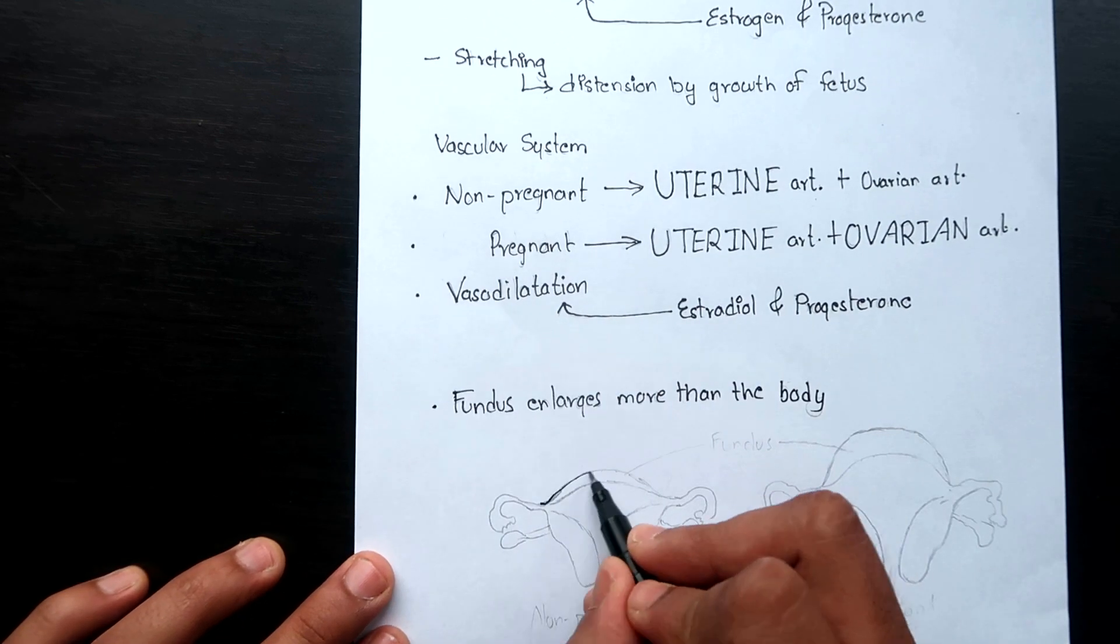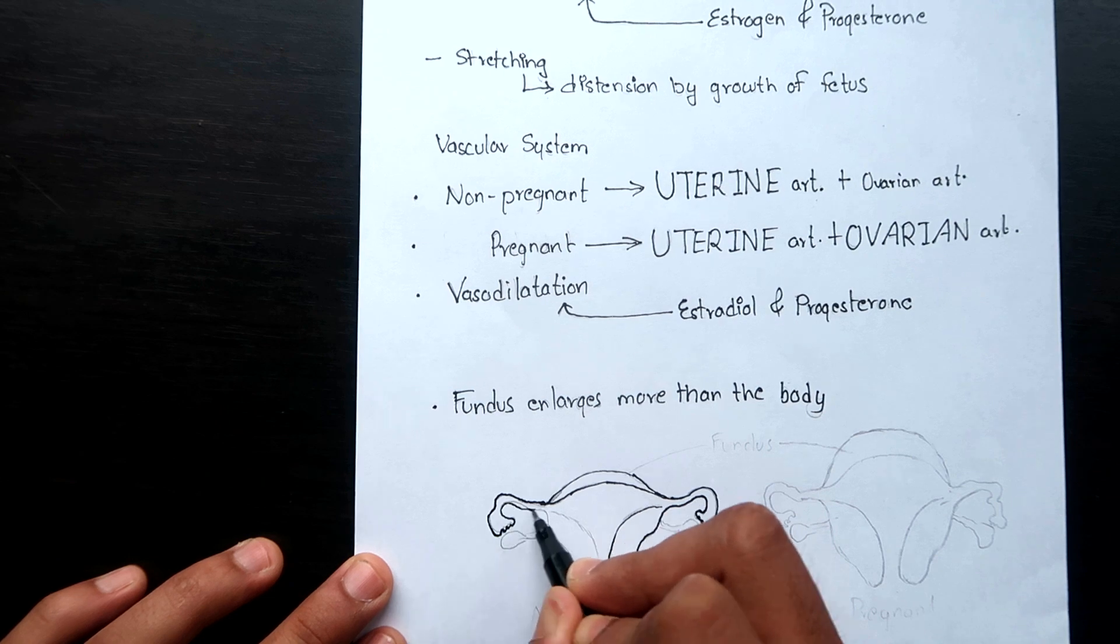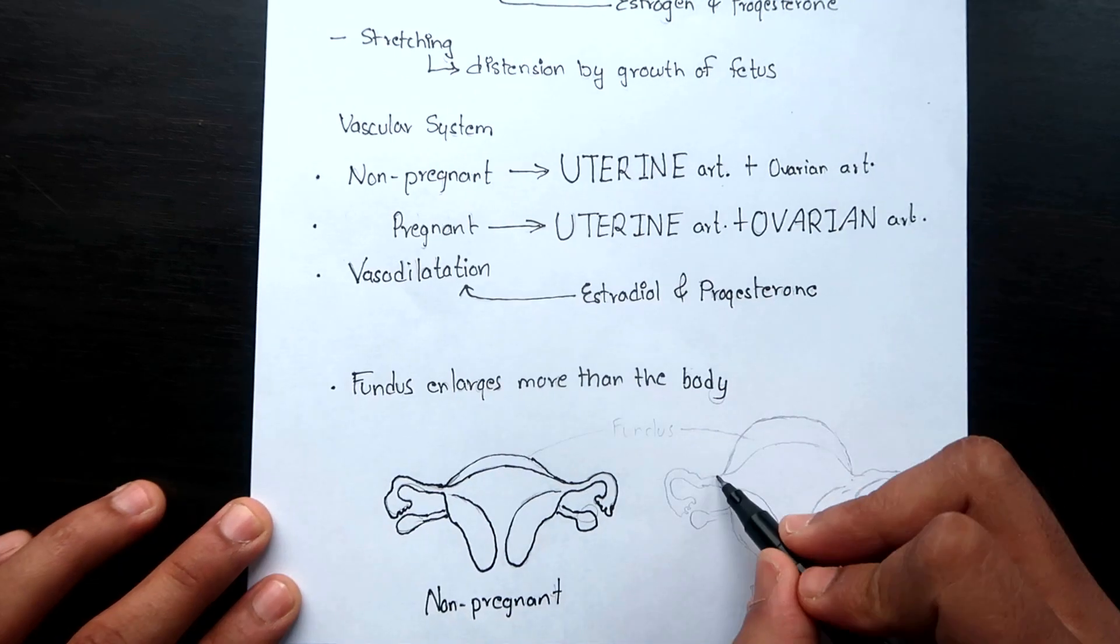Also the uterine enlargement is not a symmetrical one. The fundus enlarges more than the body.